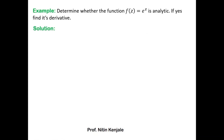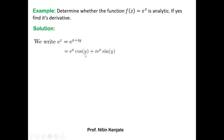Here z is a complex number which can be written as x plus iy. So e^z becomes e^(x+iy), which can be written as e^x times e^(iy). Using Euler's form, e^(iy) equals cos y plus i·sin y. So e^(x+iy) equals e^x·cos y plus i·e^x·sin y. Comparing with u plus iv, we get the real part u as e^x·cos y and the imaginary part v as e^x·sin y.